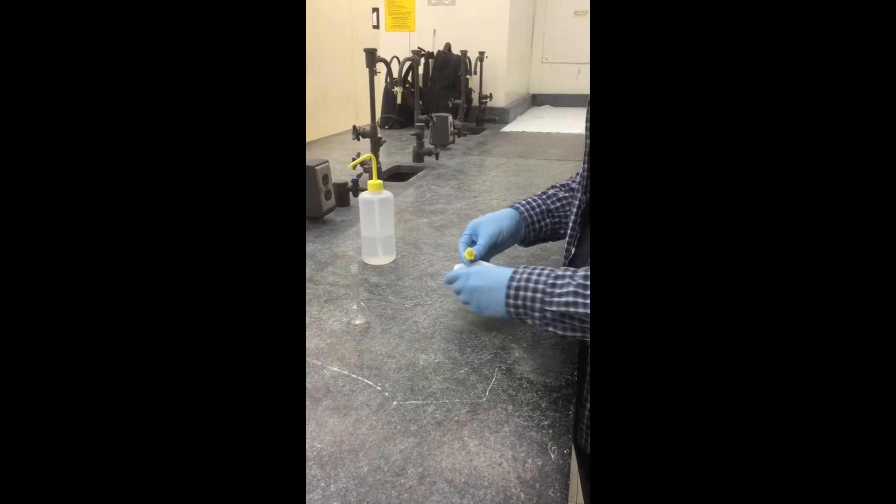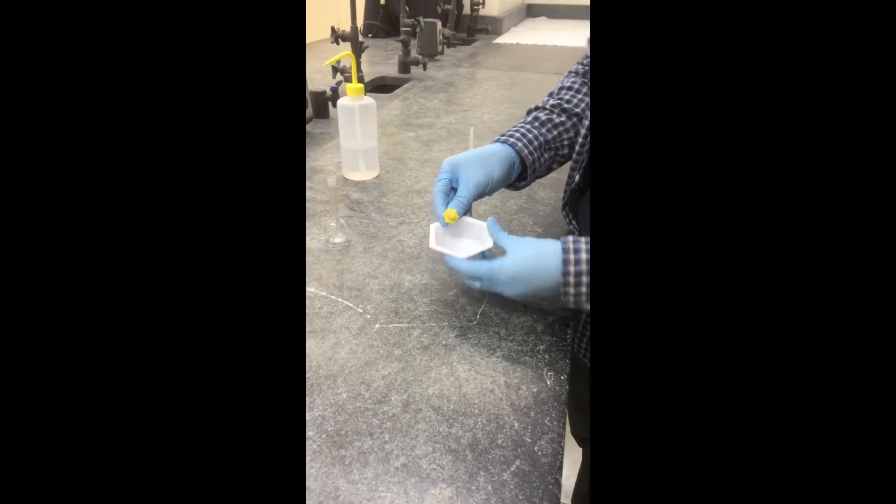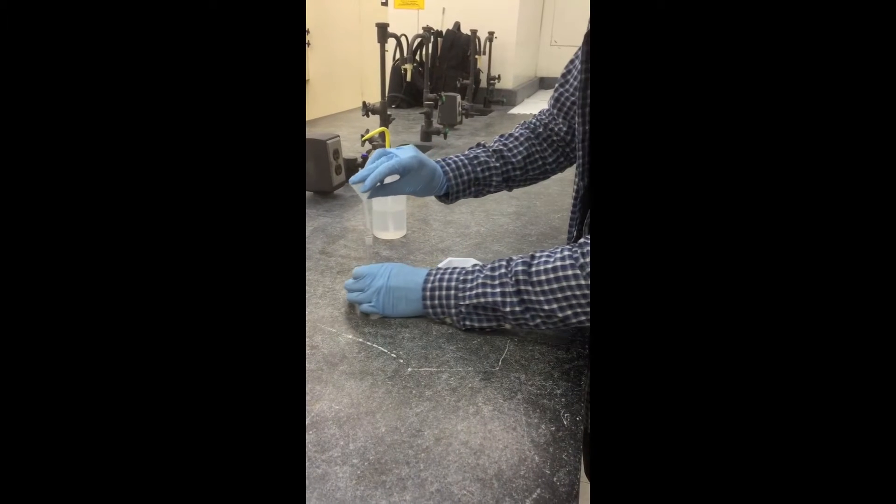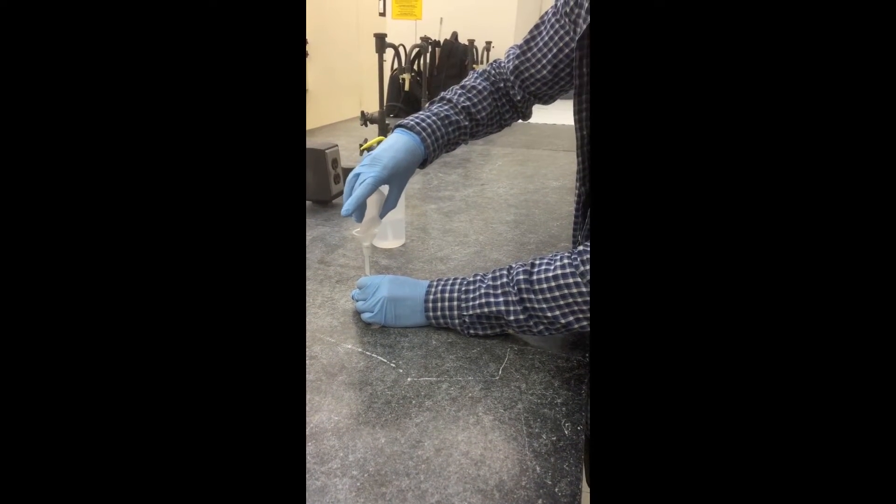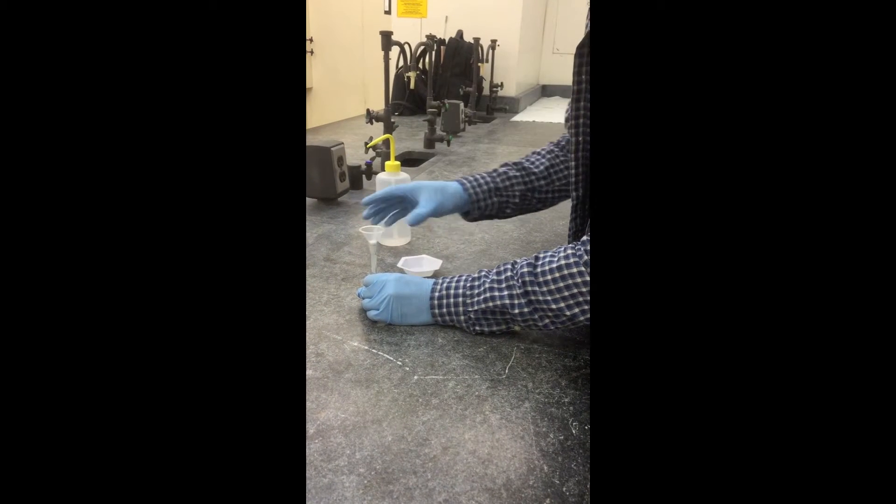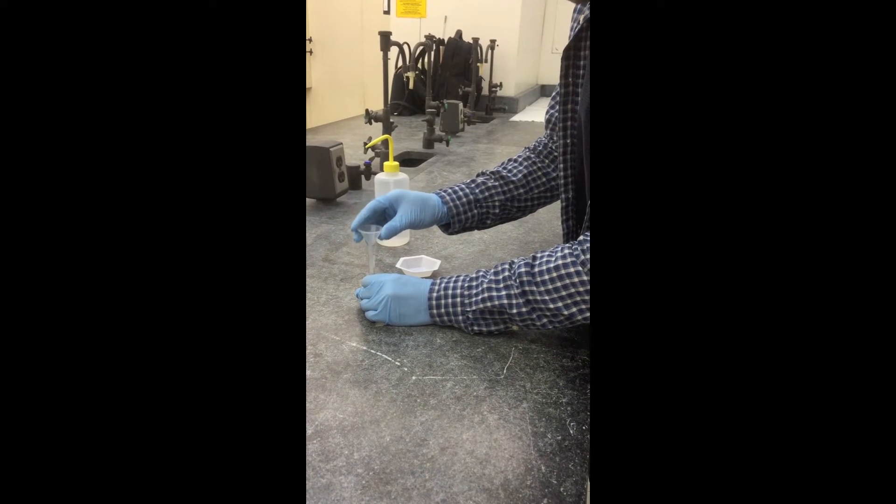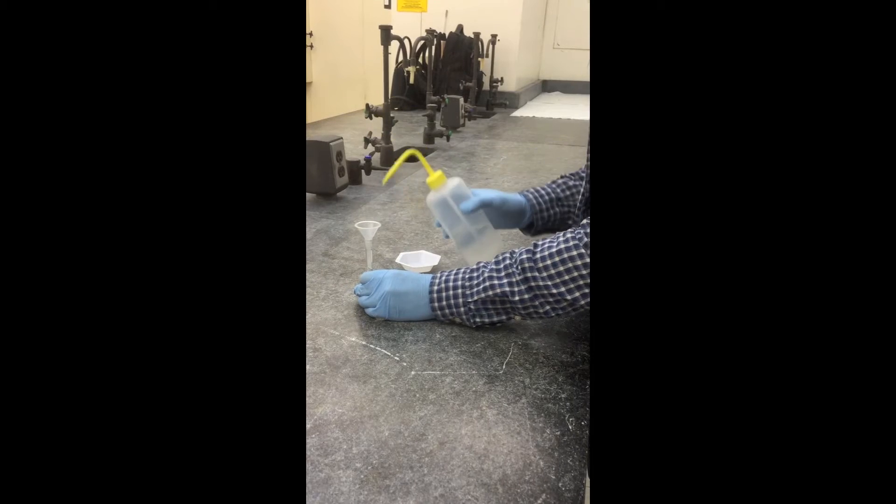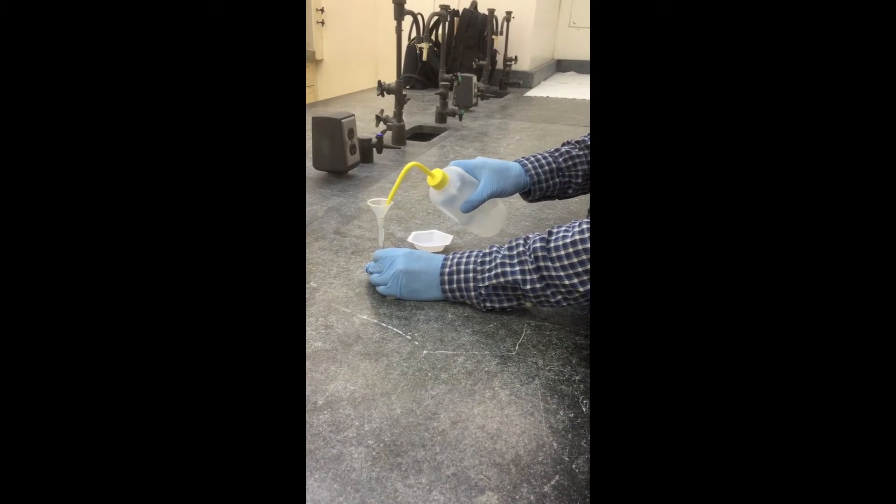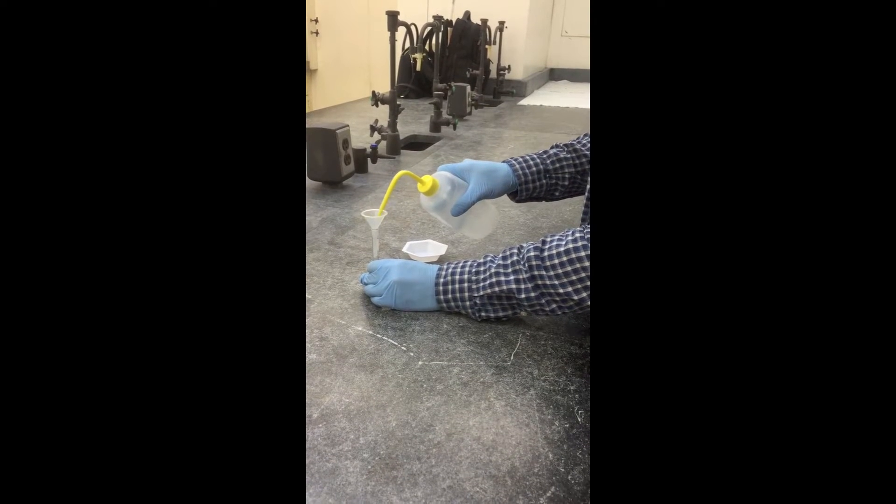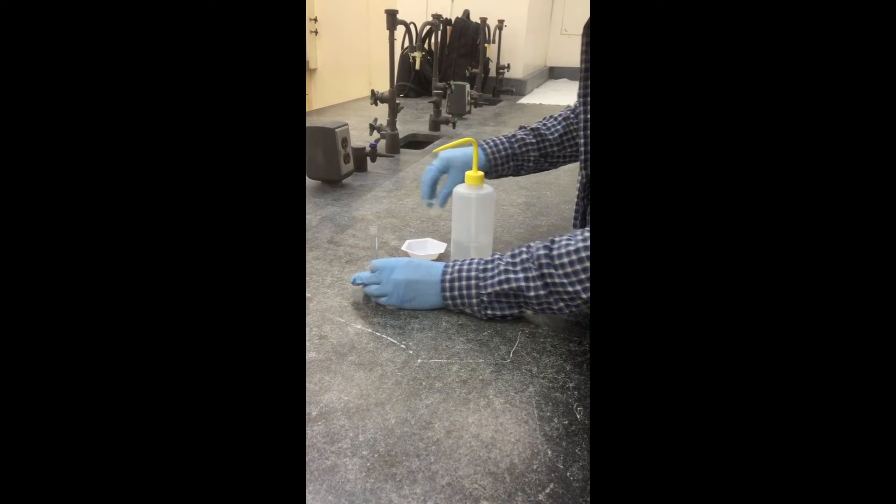Take your volumetric flask and remove the stopper. Use a funnel to add the solid. Dissolve the solid using deionized water and fill close to the volumetric marking.